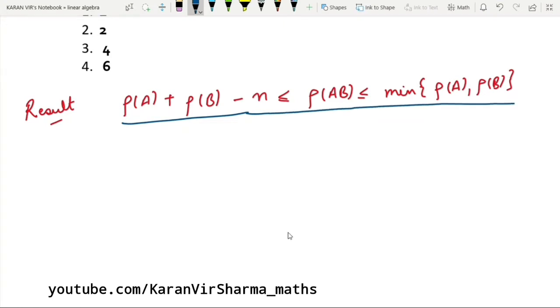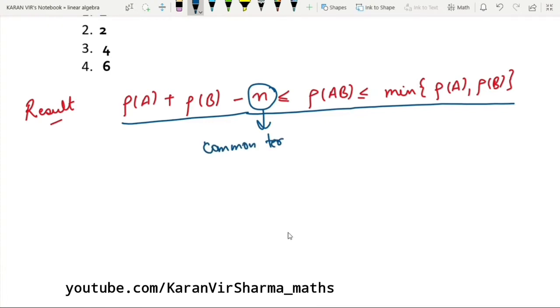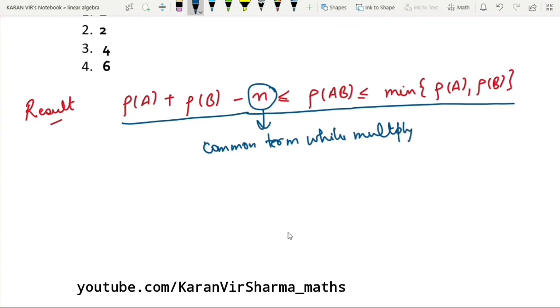And here, what is this n? This is the common term while multiplying AB. When we multiply AB, the common term that comes is written here. Let's see how we will apply this.